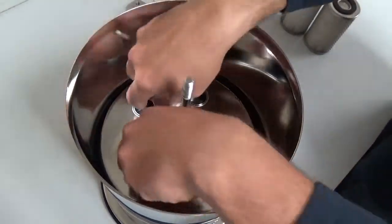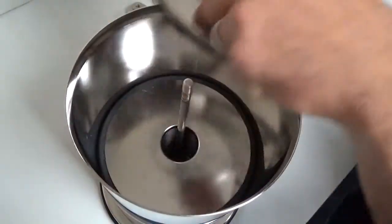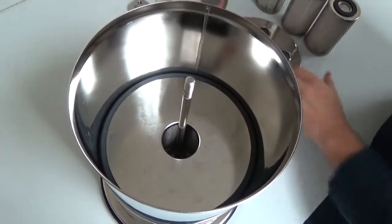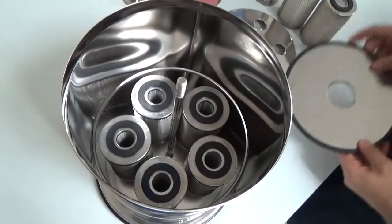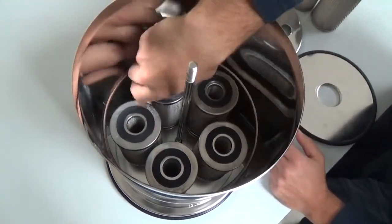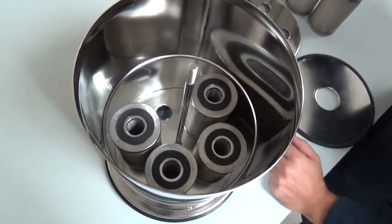Now that the filters are removed, reach in and remove the stage 2 base and stage 3 plate. This will expose the last stage of filters. As before, remove all five filters from the inner assembly.